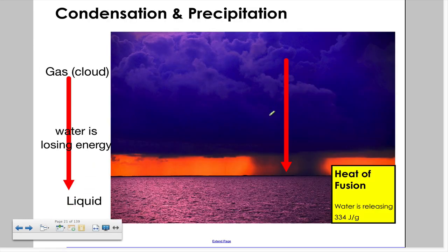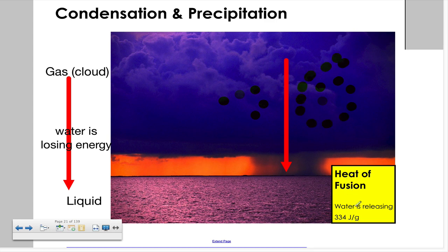The opposite is true: the water molecules appear as a gas. When they turn into liquid—in this case, the cloud itself—they release their energy at 334 joules per gram.